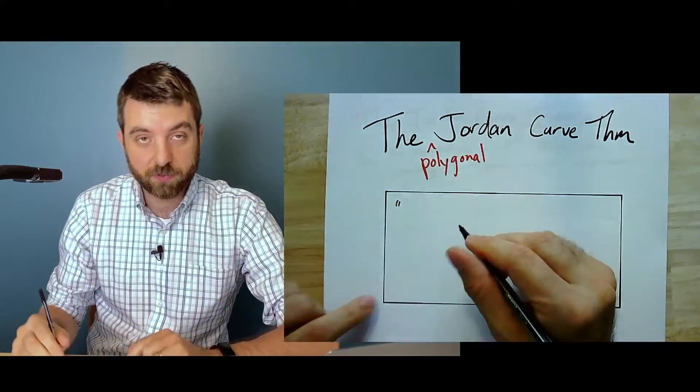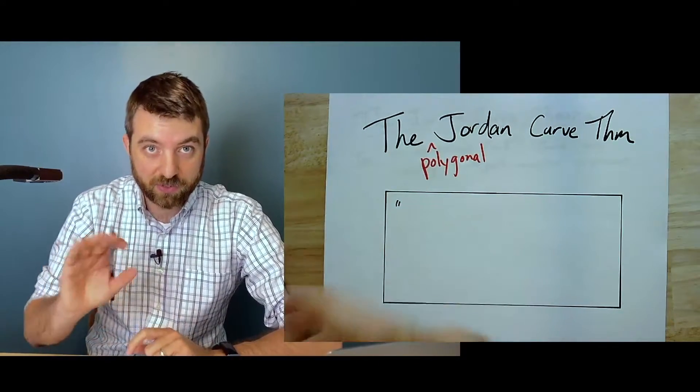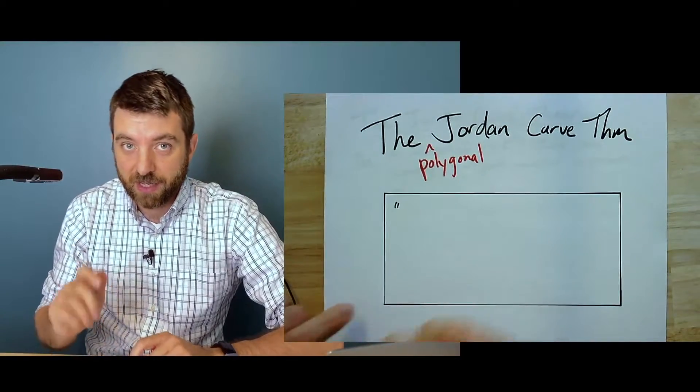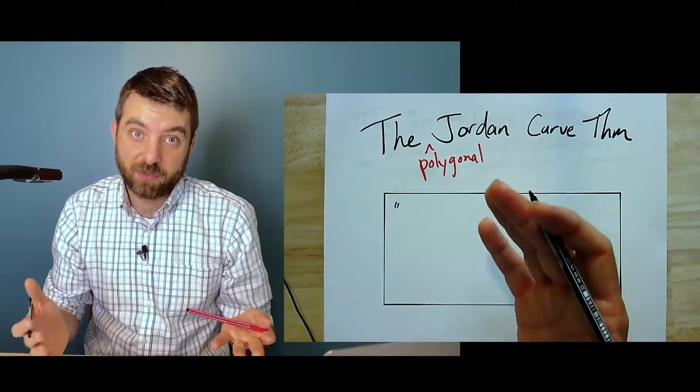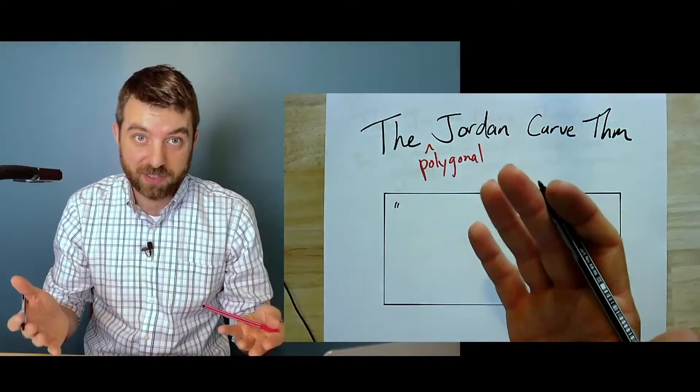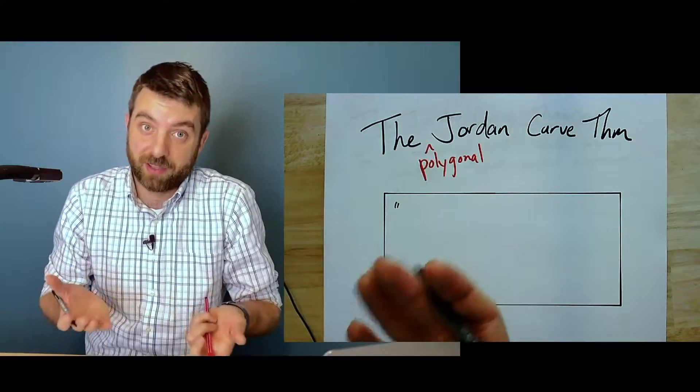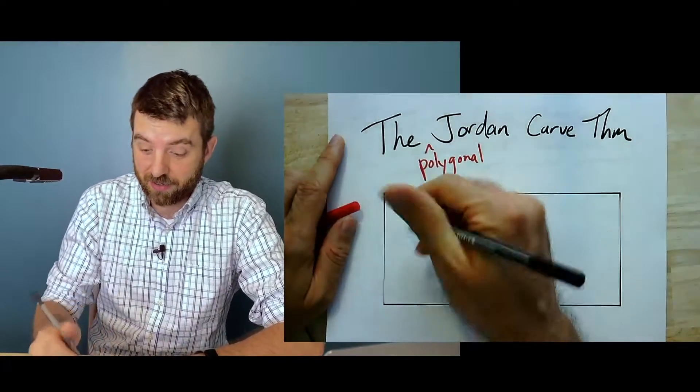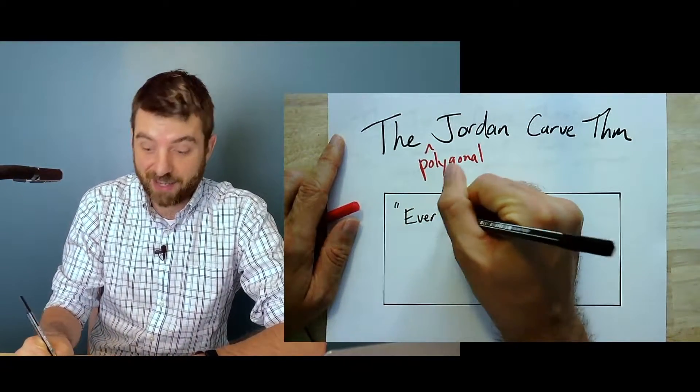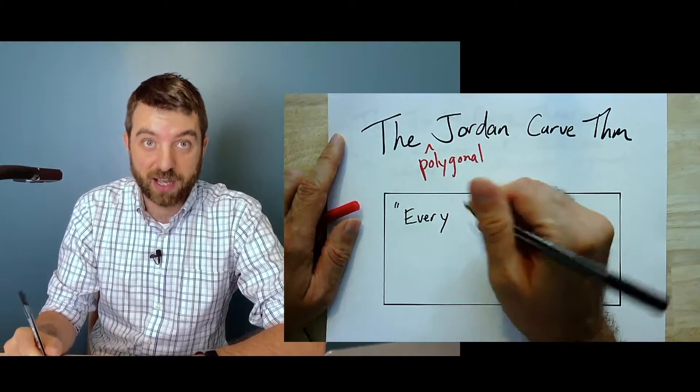I'll put it in quotes first before I give you the real statement: it says that if you have a simple closed curve, it has an inside and an outside. Simple just means it doesn't self-intersect. Closed means it comes back like a loop. So if you have a polygon, it has an inside and an outside, which sounds pretty obvious.